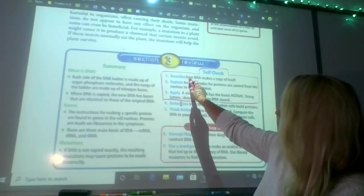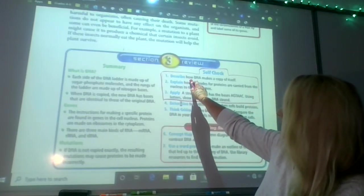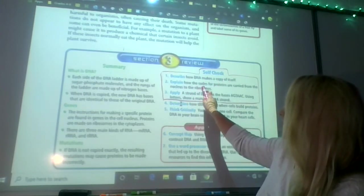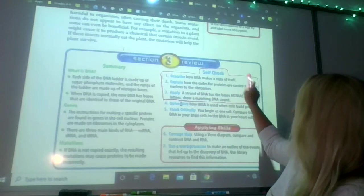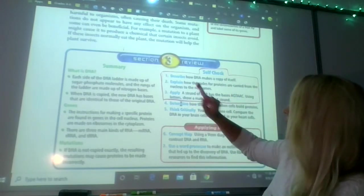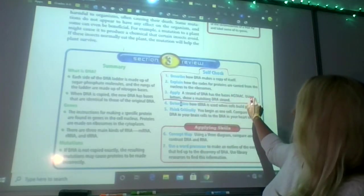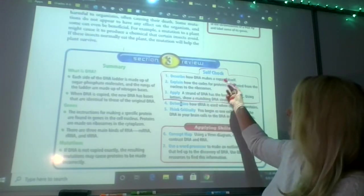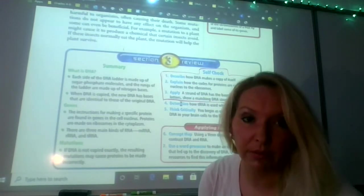So once you read through this, describe how DNA makes a copy of itself, explain how the codes for proteins are carried from the nucleus to the ribosomes. A strand of DNA has bases A-C-T-A-A-C, using the letters show what the matching strand would be.